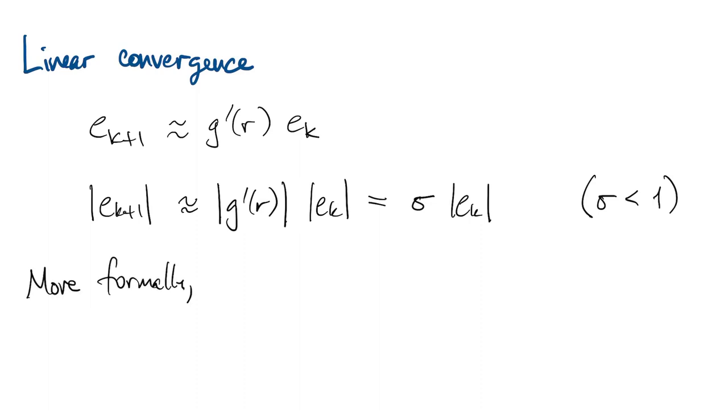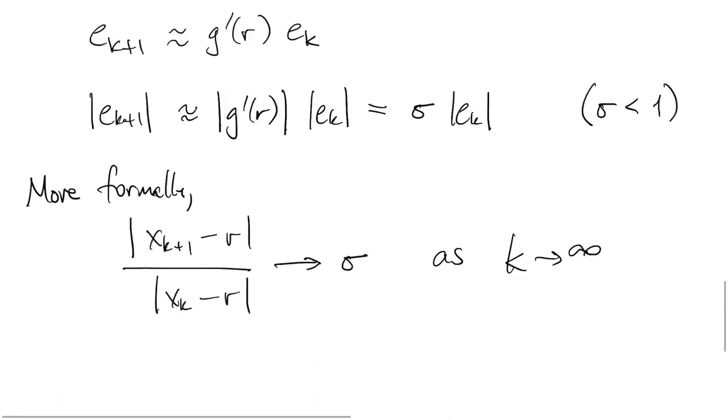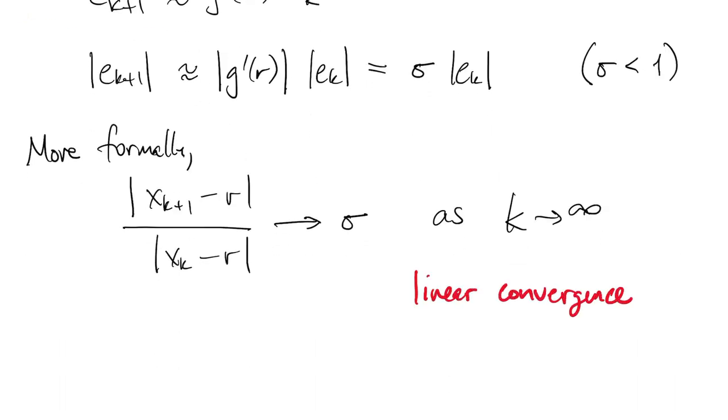And if we want to be more formal about things, we look at the ratio of successive errors, and you can show that that must approach sigma as k goes to infinity. And this is what we mean as the definition of linear convergence.